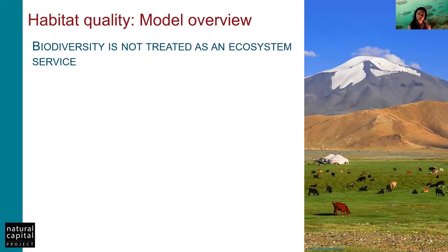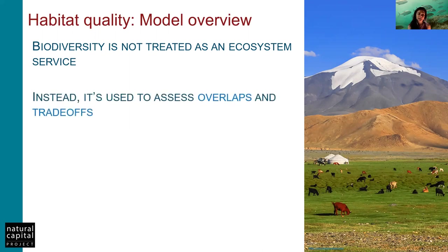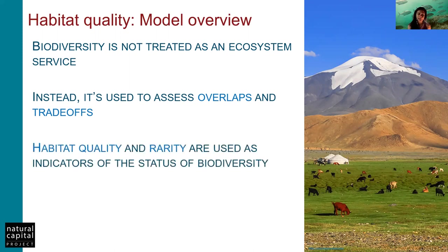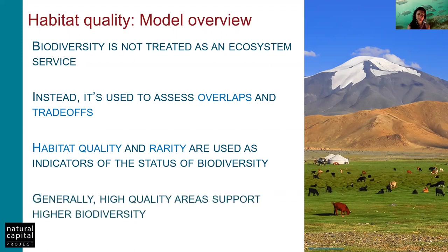The habitat model does not treat biodiversity as an ecosystem service. Instead, it is used to assess the overlap and trade-offs among biodiversity conservation, ecosystem service provision, and other land use types. Habitat quality is defined as the ability of an environment to provide conditions for appropriate individual or population persistence, and habitat rarity is defined as the relative commonness of the habitat relative to the baseline land use scenario. Both are used as indicators of status for biodiversity, and areas with large habitat extent and quality are likely to support higher biodiversity.